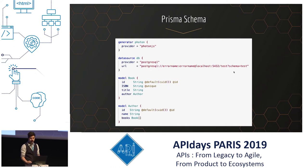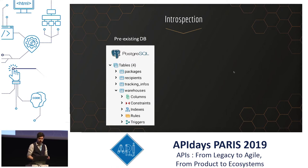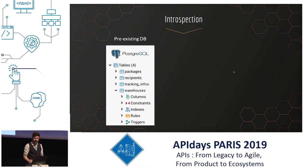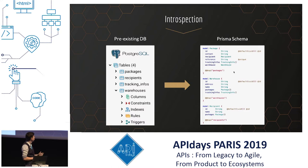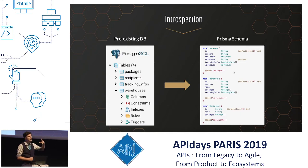Fortunately, Prisma thought about that, and so they did what is called introspection. Introspection is where Prisma looks at your database. Here we have the pre-existing PostgreSQL database with different tables, and after looking at it, it will generate the Prisma schema accordingly. As you can see, here's a subset of it — we can see the package, warehouse, recipient. It found everything in the different models including the relationships: the package linked to a warehouse, tracking info, recipient. It also found directives — for example, the @unique directive on the reference, because in our database we have an index on the reference so two packages have different references.